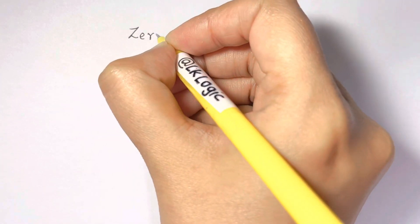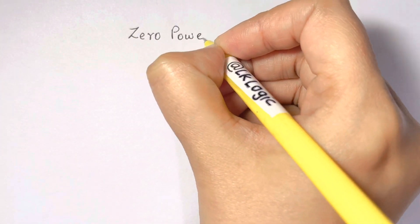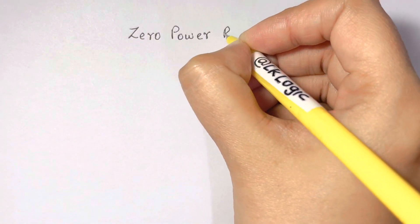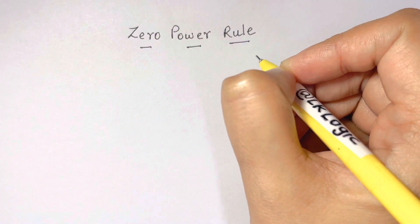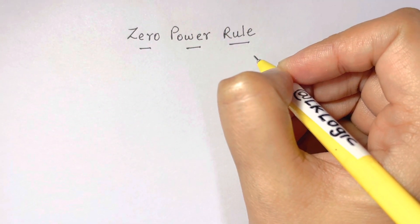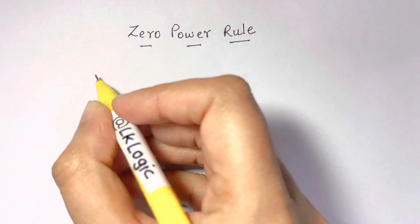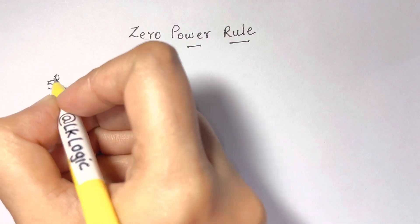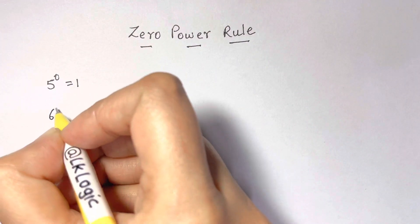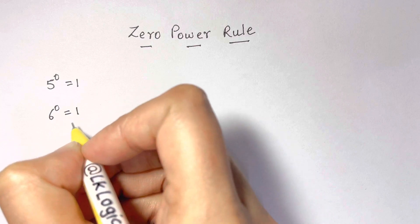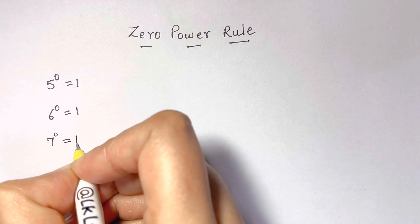As we already know and have seen many times, take any number and raise it to the power of zero, and you will get the answer as one. For example, five to the power of zero equals one, six to the power of zero equals one, seven to the power of zero equals one.